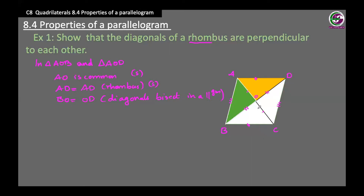Rhombus is a special type of parallelogram, so we can use that property. With all three conditions met, by SSS these two triangles are congruent: triangle AOB is congruent to triangle AOD. By CPCT, angle AOB equals angle AOD.